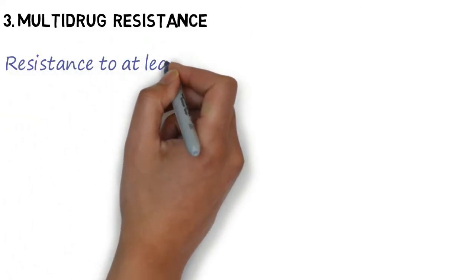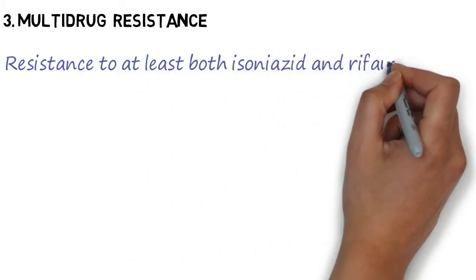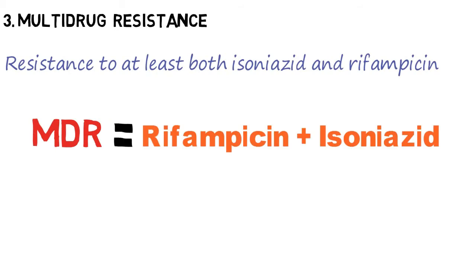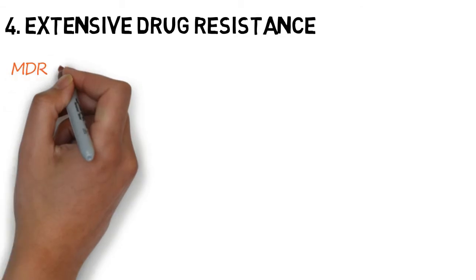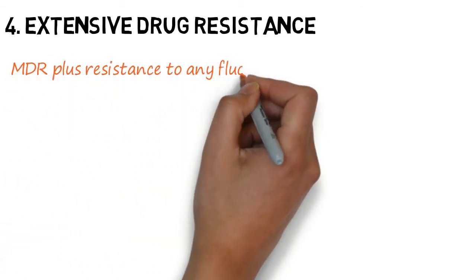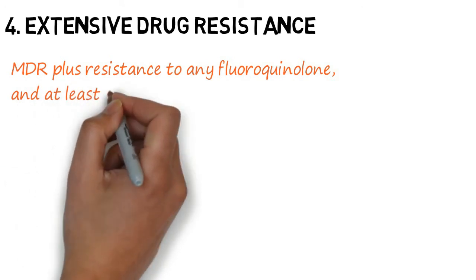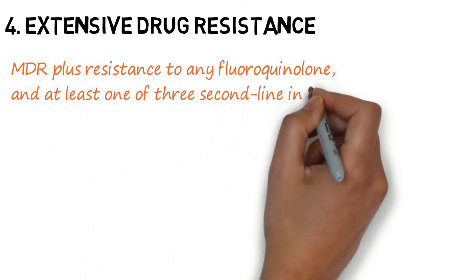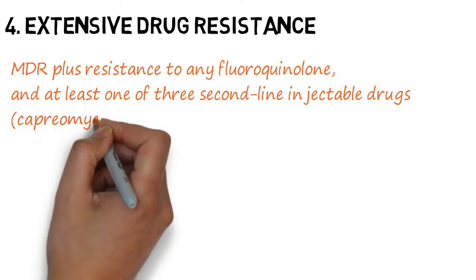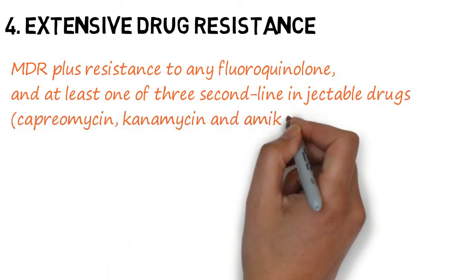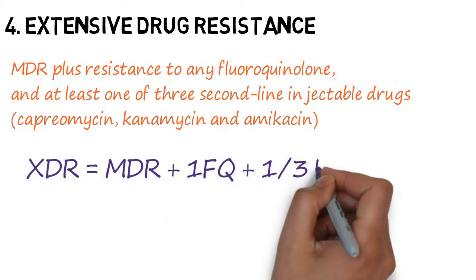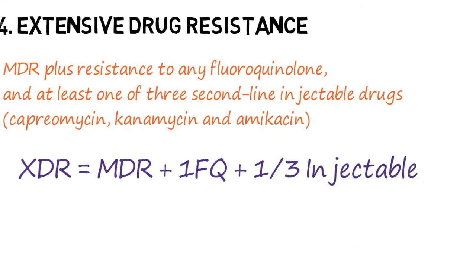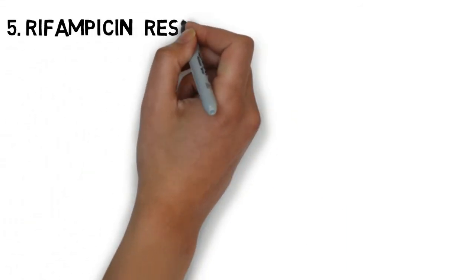In multi drug resistant TB, TB is resistant to at least both isoniazid and rifampicin. In extensive drug resistant TB, there is the presence of MDR plus resistance to any fluoroquinolone and at least one of the three second line injectable drugs. So extensive drug resistance is basically MDR plus one fluoroquinolone plus one of the three injectables.